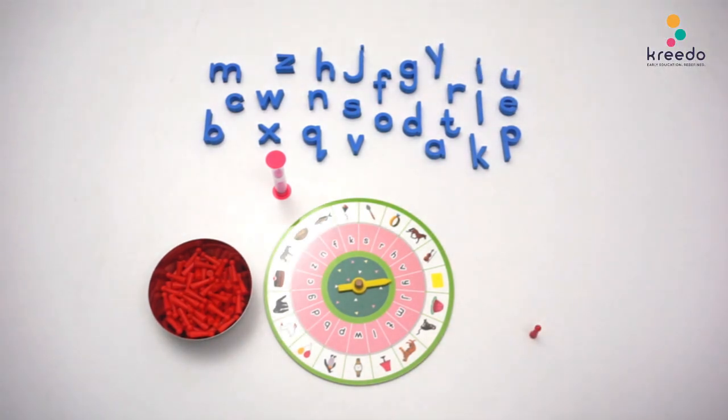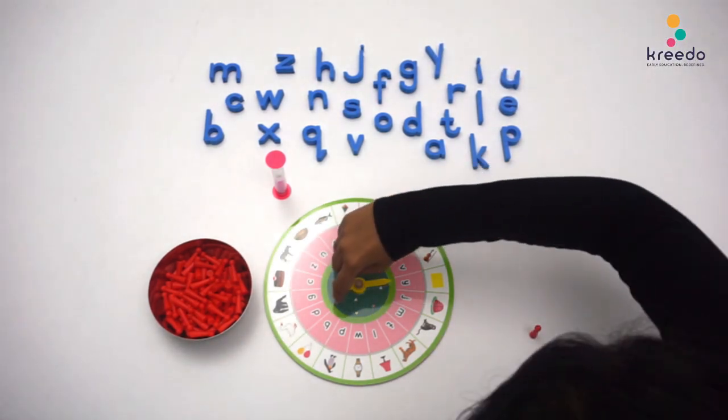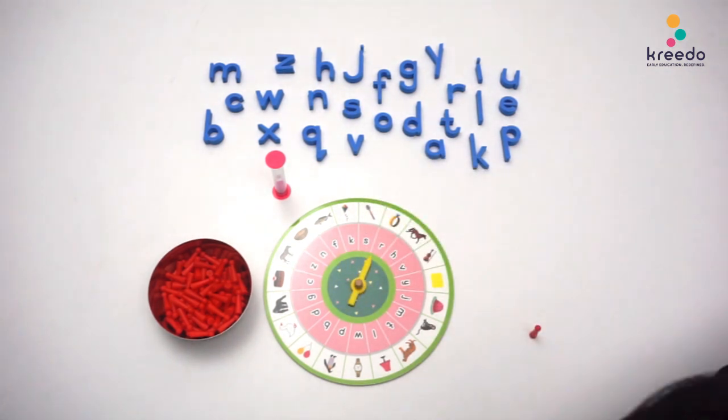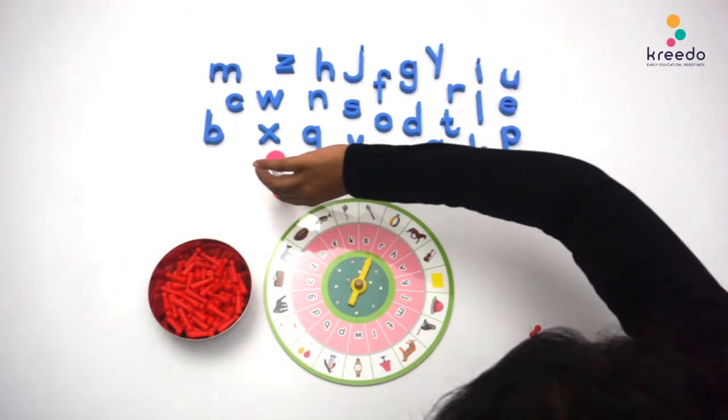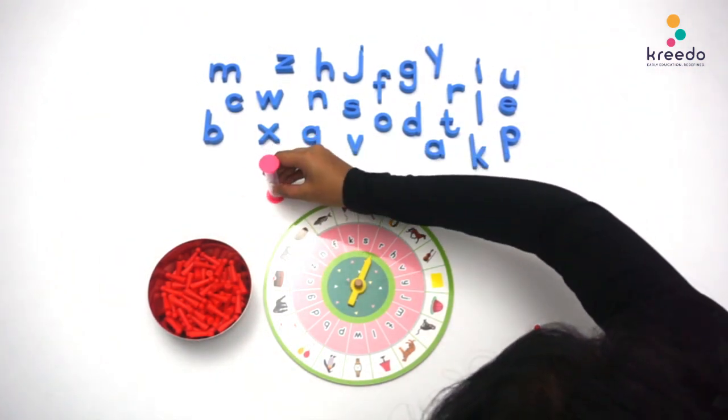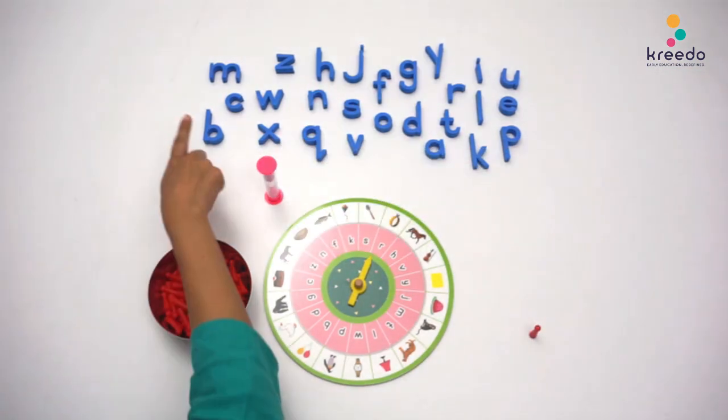The second player spins the roulette. The first player identifies the sound the pointer stopped on. The second player flips the timer, and the first player searches for the same sound.